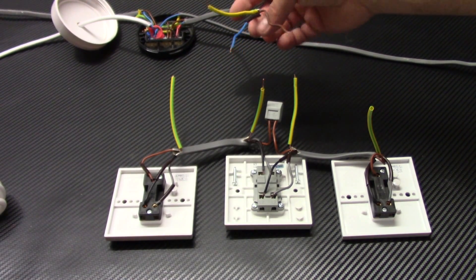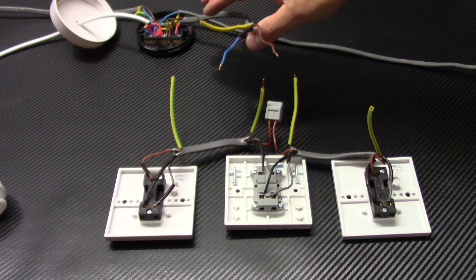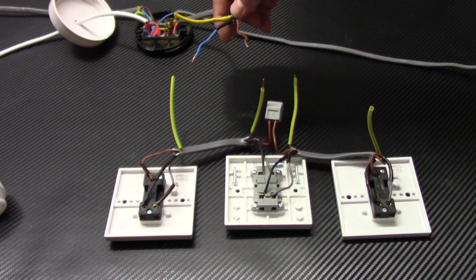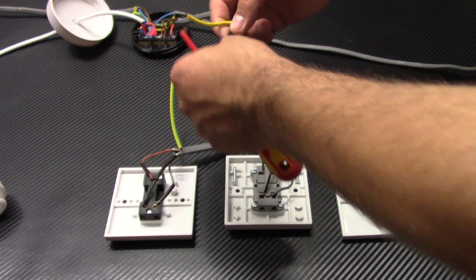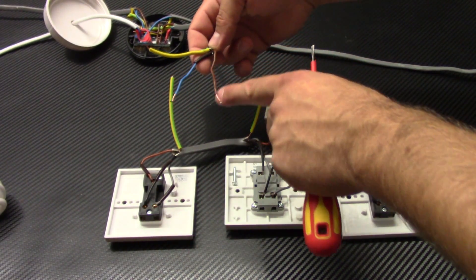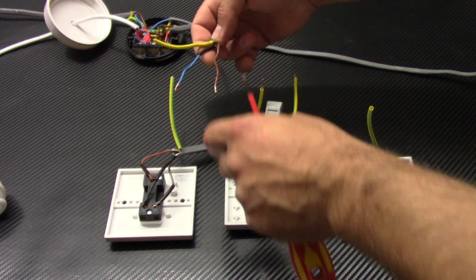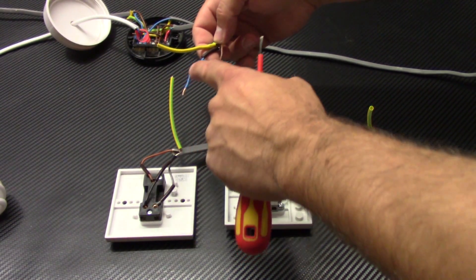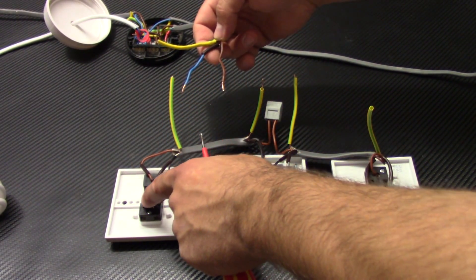So now it's time to connect this cable coming from the ceiling rose. We connect it to the two-way switch to the first one. This is our live wire. So we connect it to L2. And this is our switch live. We connect it to L1.